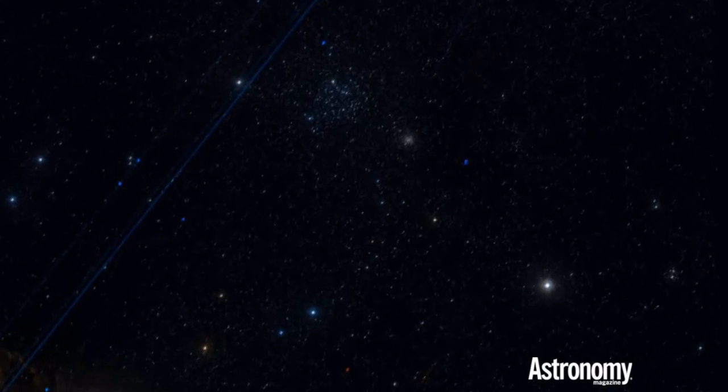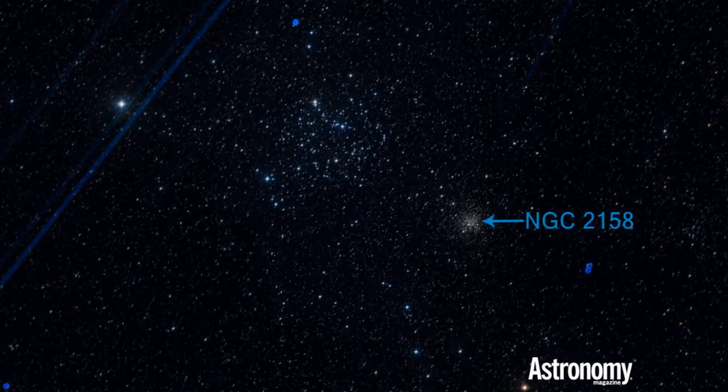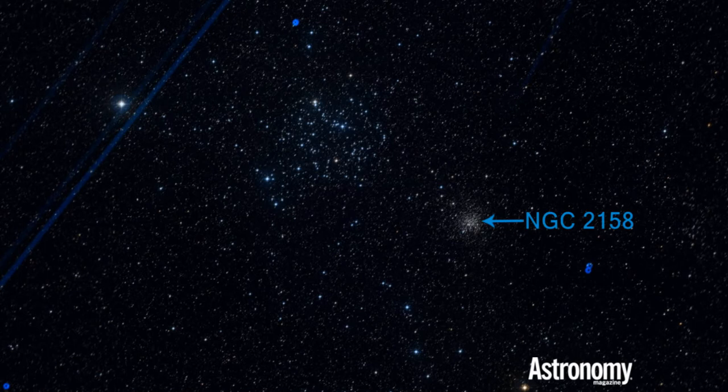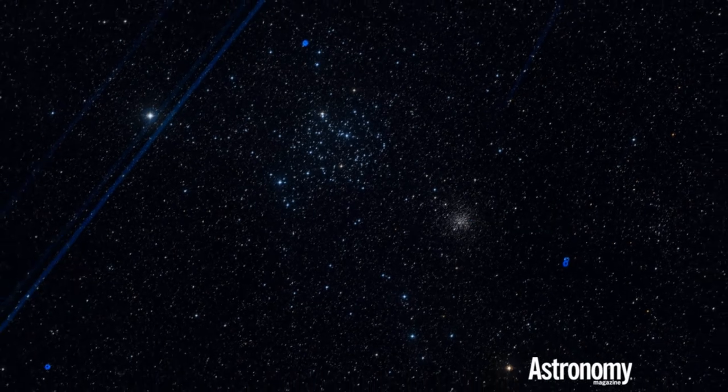If you are wondering about that sparkling neighbor of M35, that's open cluster NGC-2158. Don't attempt to spy this object with your naked eye, as it shines at magnitude 8.6. If you hope to break this condensed cluster into individual stars, you'll need to observe it with a large scope with high magnification.